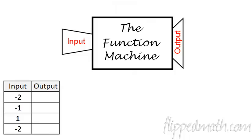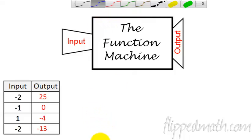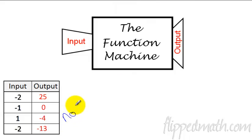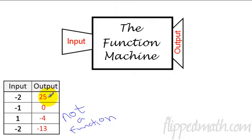Here you have a little table. If I plug in negative 2 as an input and get a 25, then a 0, then a negative 4 — now watch this last one. I plug in negative 2 again. What does that have to be? It's got to be a 25. This is not a function. The input of negative 2 was coming out as two separate outputs, so it's broken. Not a function.